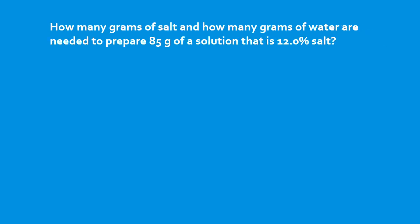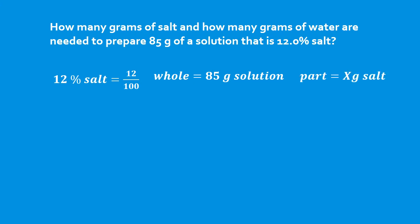How many grams of salt and how many grams of water are needed to prepare 85 grams of a solution that is 12.0% salt? 12% salt means we have 12 grams per 100 grams of solution. The whole is 85 grams of solution — that's what we want to make. What we don't know is the part: how many grams of salt we need. So we set up a ratio: 12 over 100 equals x over 85 — part over the whole, part over the whole.